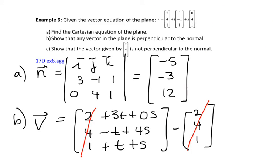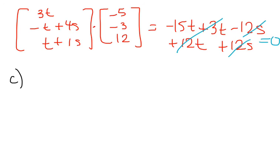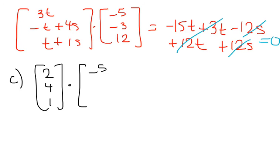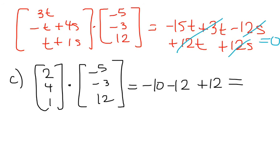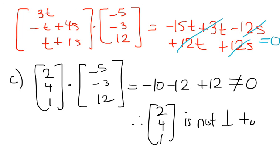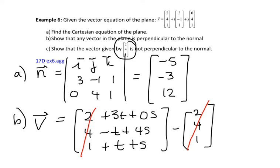Now showing that the vector (2, 4, 1) is not perpendicular to the normal: dotting (2, 4, 1) with (−5, −3, 12) gives −10 − 12 + 12 = −10, which does not equal zero. Therefore (2, 4, 1) is not perpendicular to the normal.